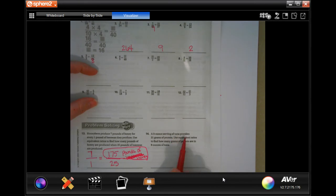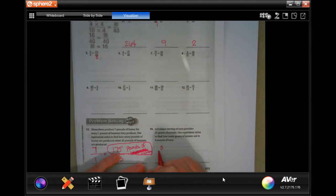A 3-ounce serving of tuna provides 21 grams of protein. Use equivalent ratios to find out how many grams of protein are in 9 ounces of tuna. So 3, 21, 9 ounces of tuna. So 3 times what is 9? 3 times 3. So 21 times 3 is going to be 63. So 63 grams of protein.